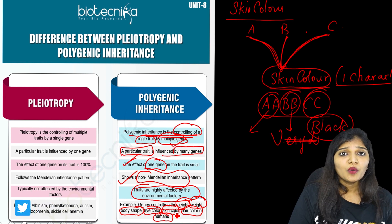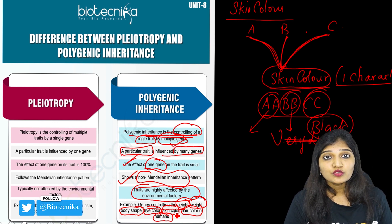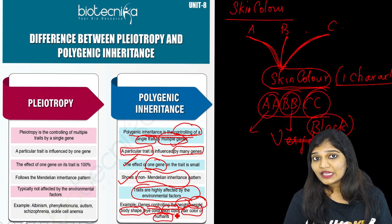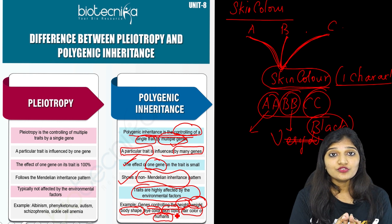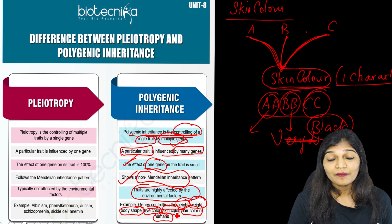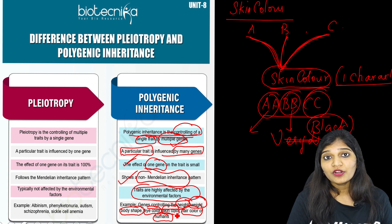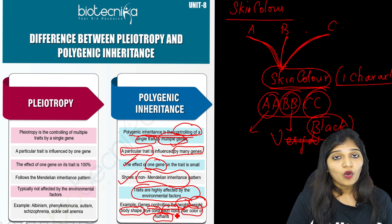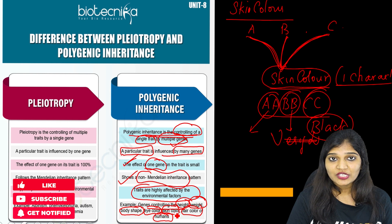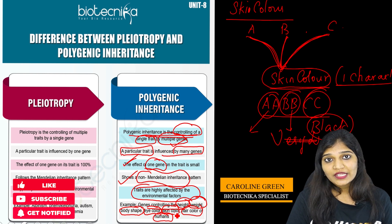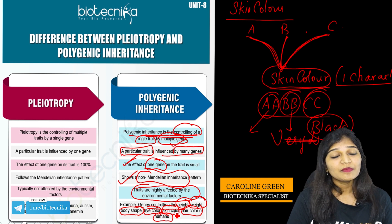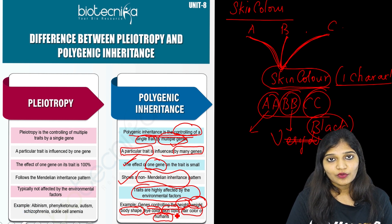Today we discussed the differences between pleiotropy and polygenic inheritance: pleiotropy is one gene controlling many characters, and polygenic inheritance is many genes controlling one character or trait. I believe this video has been helpful and you have understood everything covered today. If you like this video, please like, share, and subscribe to our channel. You can also join our Telegram channel. Thank you all for your time — see you in the next video.